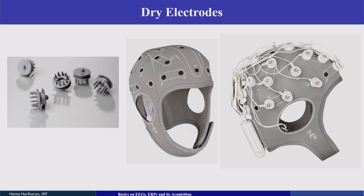Dry electrodes have prongs that create contact on the scalp — no gel or conductive medium is used. There is a cap into which these prongs are inserted, all wires are connected to a signal processing unit that captures the signal and performs further signal processing to obtain EEG data.